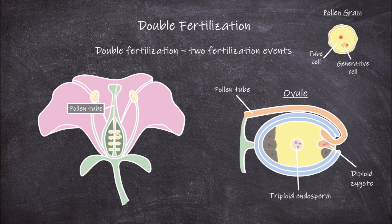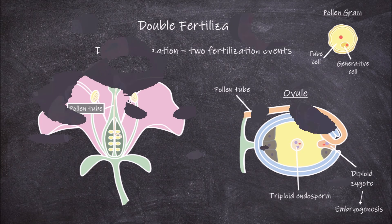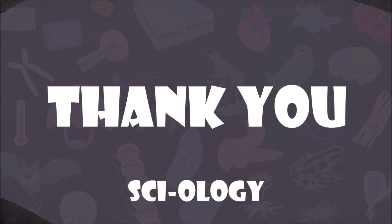The diploid zygote then continues to divide and go through the stages of embryogenesis. And that concludes this video on double fertilization. Thank you for watching.